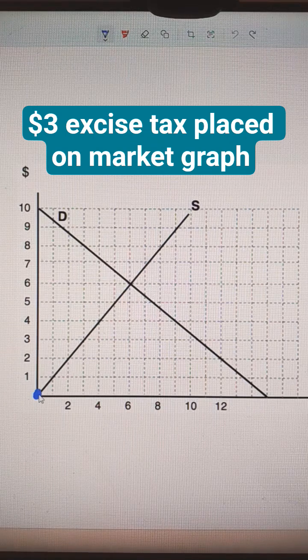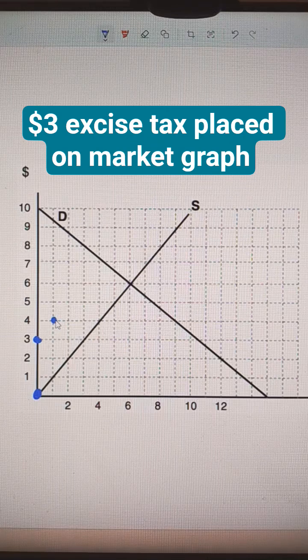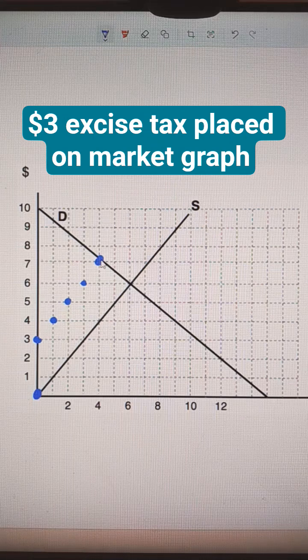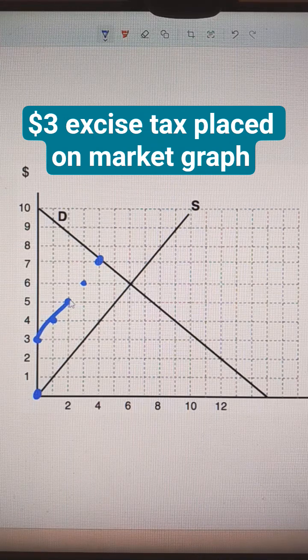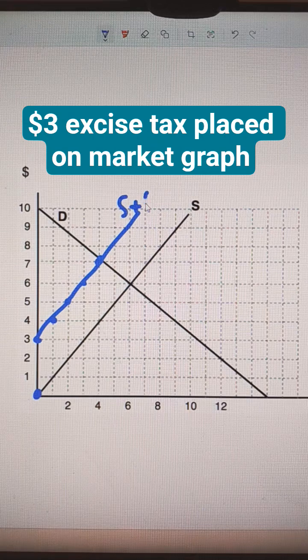So start out here, this is at $0. We're going to shift it up, or we're adding $3 to each production level. So just draw a new linear supply line right there, and that's going to be S plus tax.